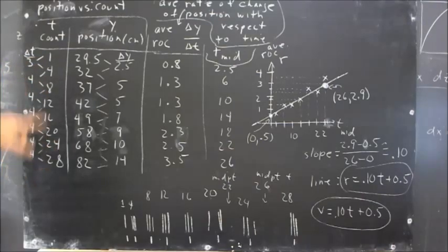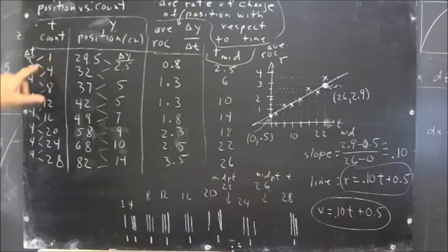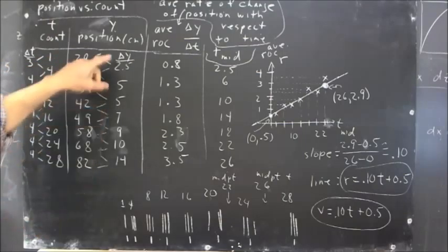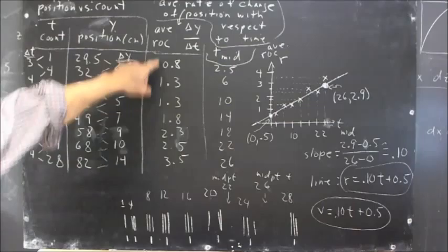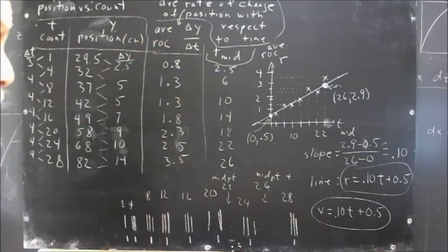And the difference, except for the first interval, is always 4 ticks here. The difference is here, increase, giving you increasing average rate of change of Y with respect to T.